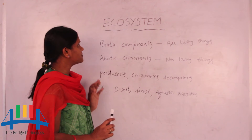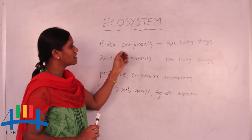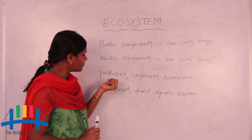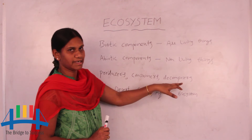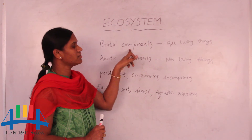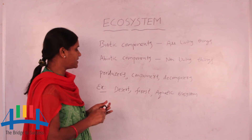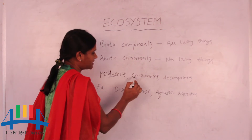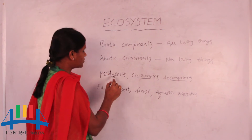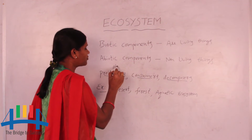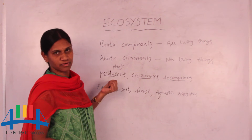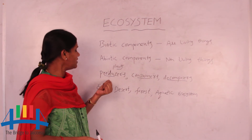When we observe the ecosystem as part of biotic components, we look at producers, consumers, and decomposers. These three are examples of biotic components — meaning living things. The first is producers: producers are commonly plants, because they prepare their own food, so they are called producers.